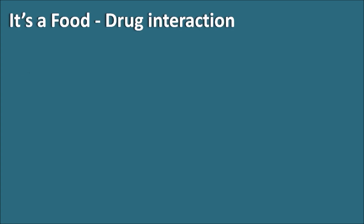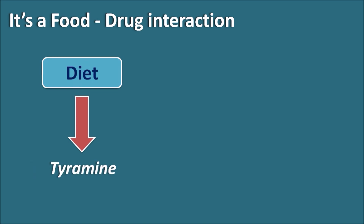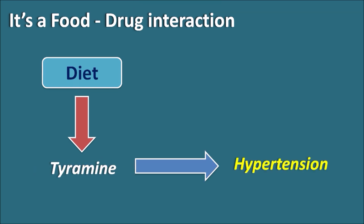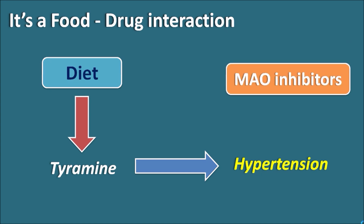In this video, let us see what is cheese reaction. Cheese reaction is a food and drug interaction. The diet we take may contain a substance called tyramine. Tyramine can generally produce an increase in blood pressure leading to hypertension. Normally, hypertension produced by tyramine is controlled by our physiological metabolism. However, when tyramine-containing food is given along with MAO inhibitors, these drugs increase the effect of tyramine, thereby increasing the hypertensive response, which results in severe hypertension. This reaction is called the cheese reaction.